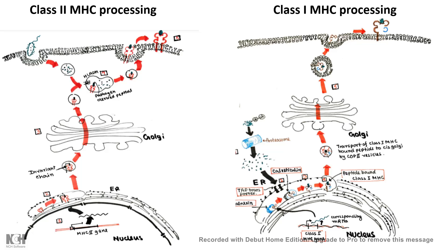After that, the MHC class 1 molecule — loaded with the peptide to be displayed — is delivered via ER-Golgi transport and then displayed on the surface of the cell.